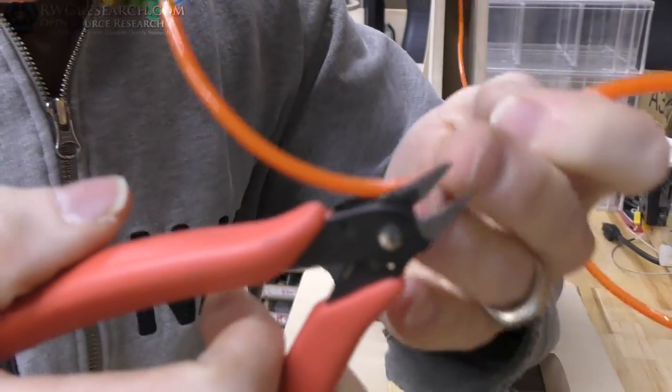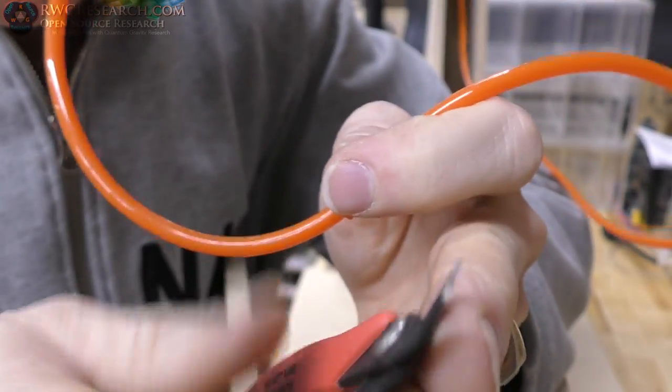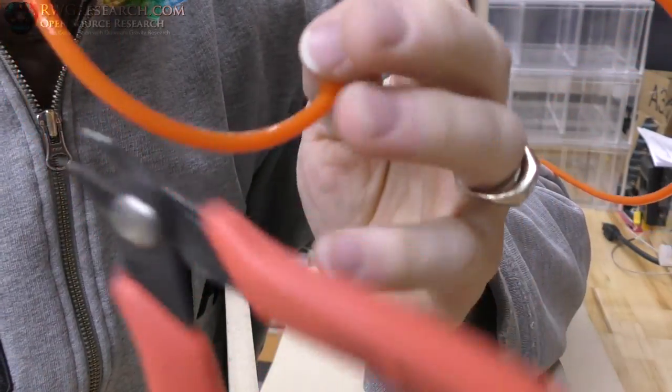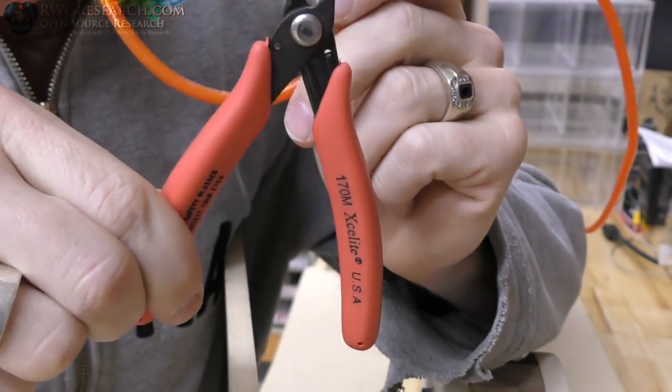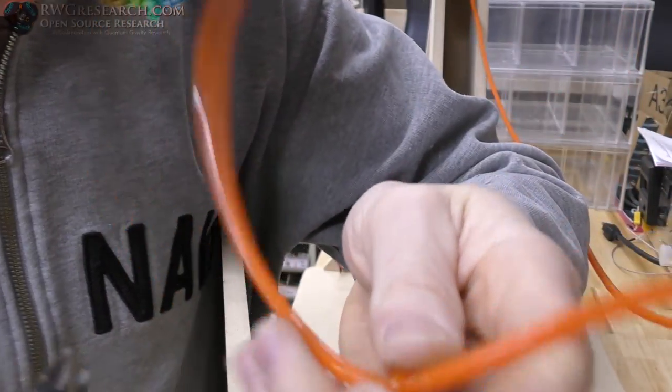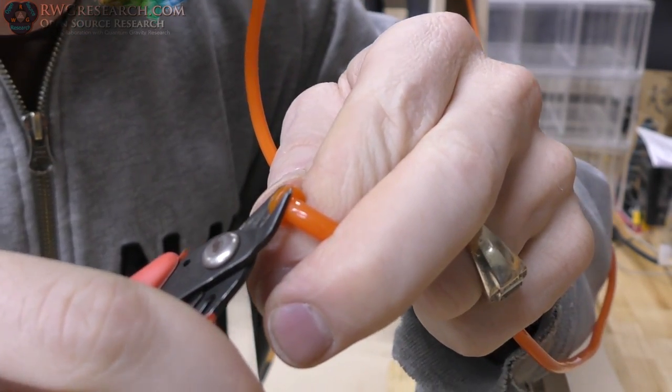So you're supposed to take a pair of one of these sharp dikes, side cuts, whatever you want. You want to call them precision, these are actually precision cuts by this company. They're okay. I've had better branded versions of this. But what you do is actually cut this off.